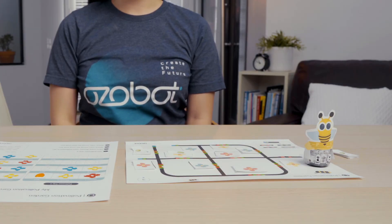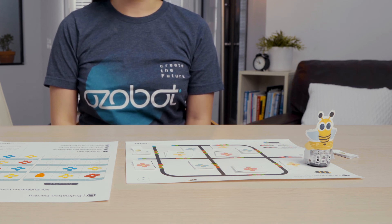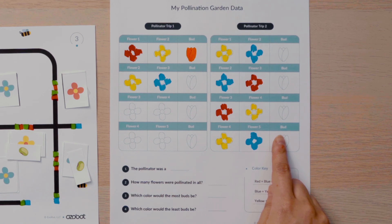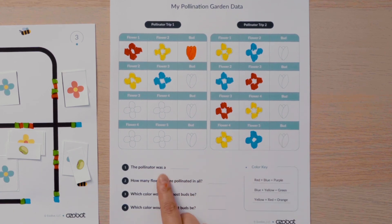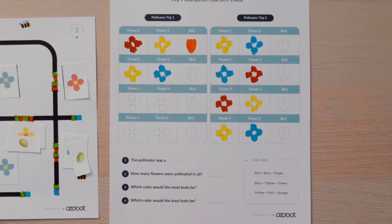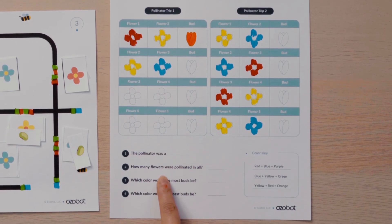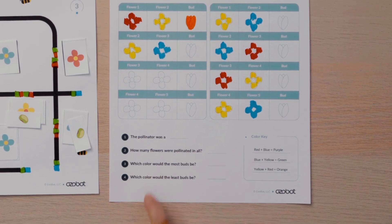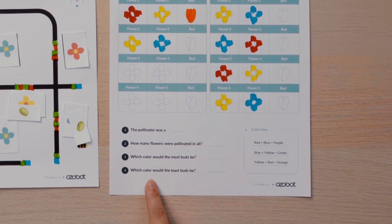You will use your math skills to answer questions that summarize your data. Use the trip one and trip two data charts to answer the four questions. The pollinator was A. How many flowers were pollinated in all? Which color would the most buds be? Which color would the least buds be?